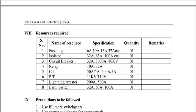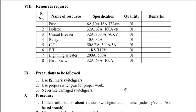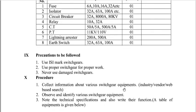The resources required for this practical include: fuse, isolator, circuit breaker, relay, CT (current transformer), PT (potential transformer), lightning arrestor, and earth switch. These are listed along with their technical specifications and quantities.